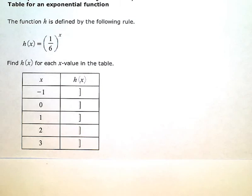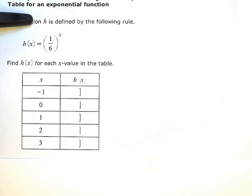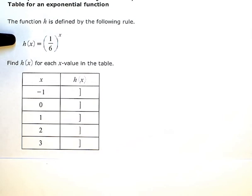Table for an exponential function. The function h is defined by the following rule: h of x equals 1 sixth to the x power. Find h of x for each x value in the table.